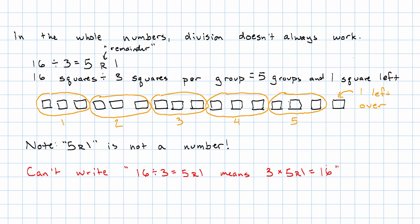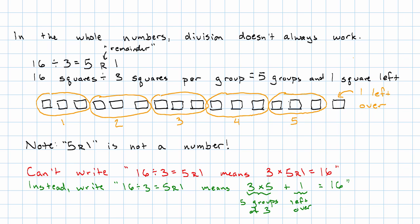Instead, I write that 16 divided by three equals five remainder one, which means three times five — five groups of three — plus one left over gives me my 16 squares.